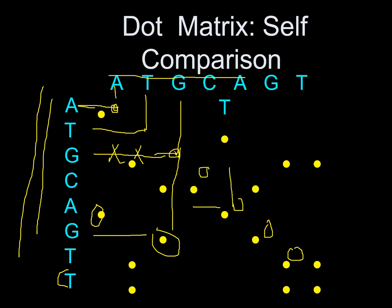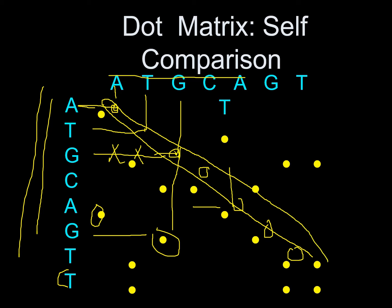These dots basically lead to the formation of diagonals, as you can see a diagonal formed here. This shows that these two particular sequences are very much similar — the base pairs are the same. Dot matrix is implemented in this way to show the similarity between two sequences.